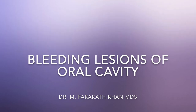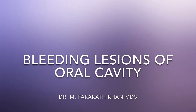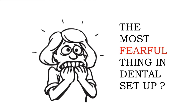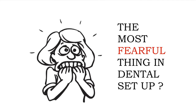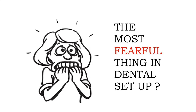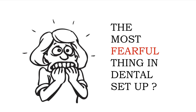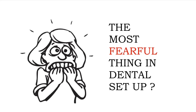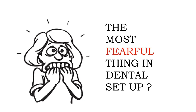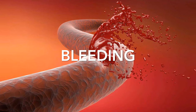Hi friends, welcome to Diagnoks. This is Dr. Faragat. Today I am going to discuss a very interesting topic: bleeding lesions of the oral cavity. The most fearful thing in a dental setup is bleeding, especially before extractions. For suspicious patients, those with liver disorders, or patients on antiplatelet drugs, we should do blood investigations like bleeding time, clotting time, INR, prothrombin time, and activated partial thromboplastin time. We should also have gelatin sponge and tranexamic acid tablets available to control bleeding.